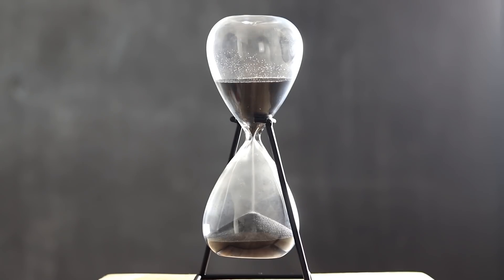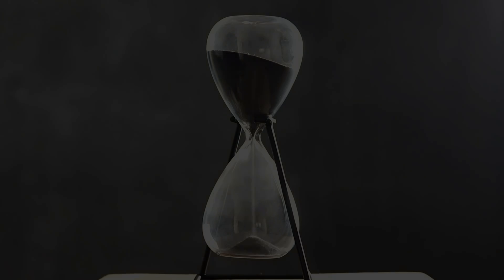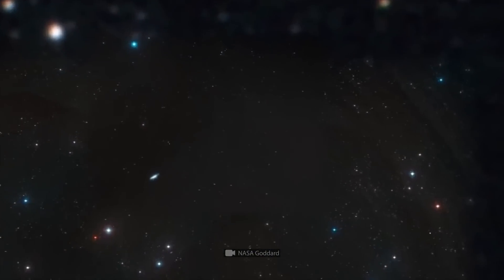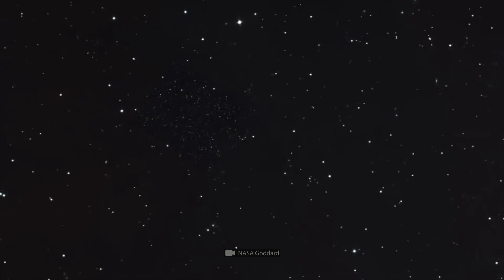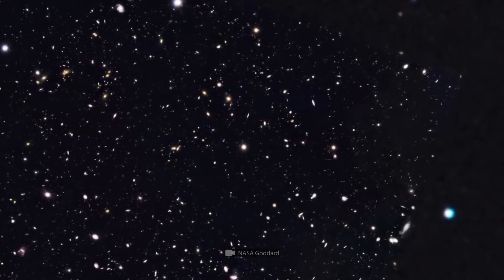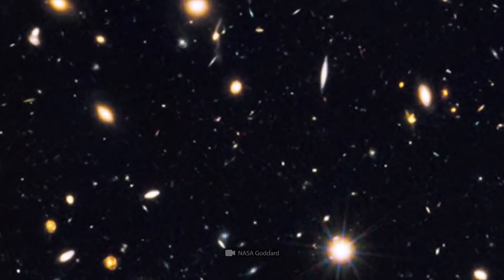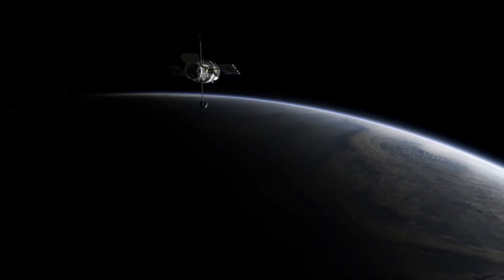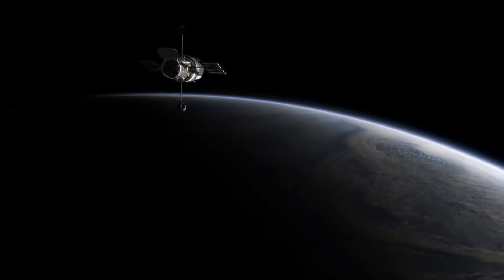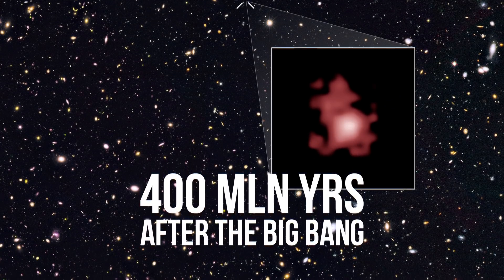Considering that telescopes are sort of like time machines, we might say that the Webb will travel back in time, but not literally. One of the telescope's tasks would be to find light from ancient galaxies that formed almost immediately after the Big Bang. Other telescopes also make similar observations. The Hubble can see the universe as it was 400 million years after the Big Bang.